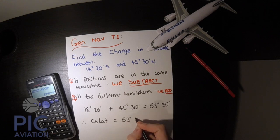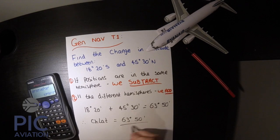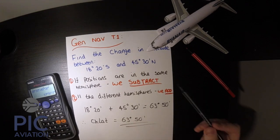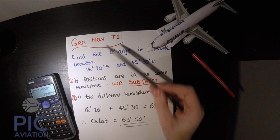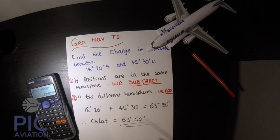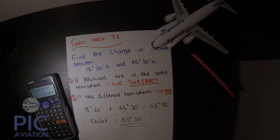And that concludes Tutorial 1 regarding GenNav. I do hope that's helped. In the next tutorial, we'll move on to changes in longitude.